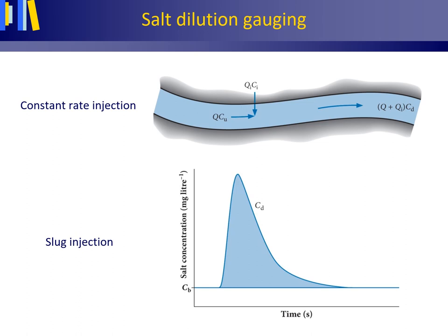In mountain streams, the operation of an Ott-type current meter may be difficult due to turbulence of the water flow, high velocities, or rocks and shallow sections in the channel. Under such circumstances, the velocity-area or graphical method cannot be used. However, a well-suited technique for estimating discharge in turbulent mountain streams is salt dilution gauging, where the discharge is determined from the degree of dilution by the flowing water of an added solution of sodium chloride or table salt. There are basically two methods: constant rate injection and slug injection.